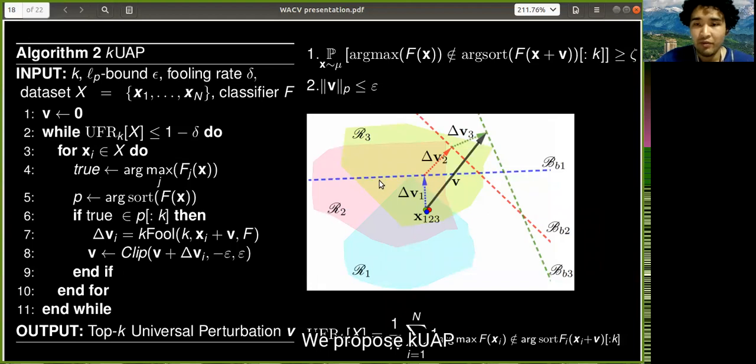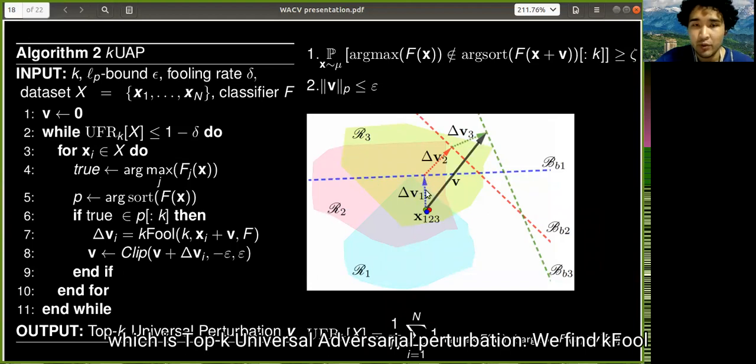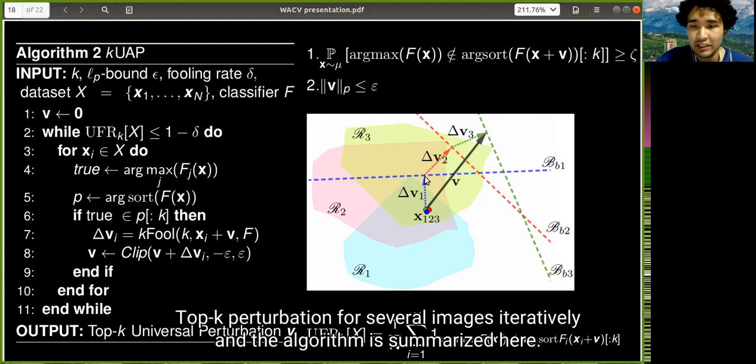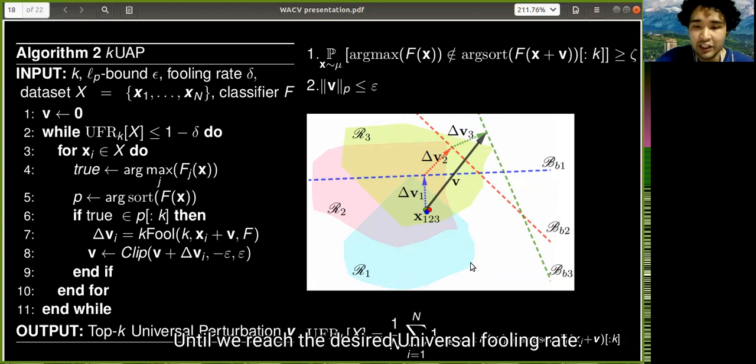Then we proposed K-UAP, which is a top-k universal adversarial perturbation. We find K-Fool for several images. We find top-k perturbation for several images iteratively, and the algorithm is summarized here until we reach the desired universal fooling rate.